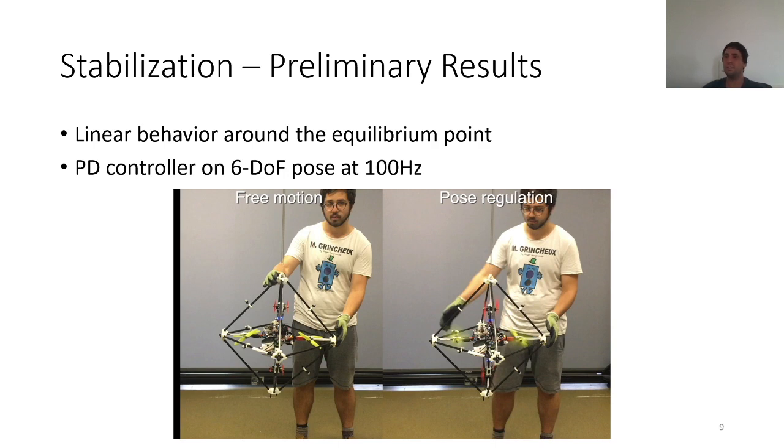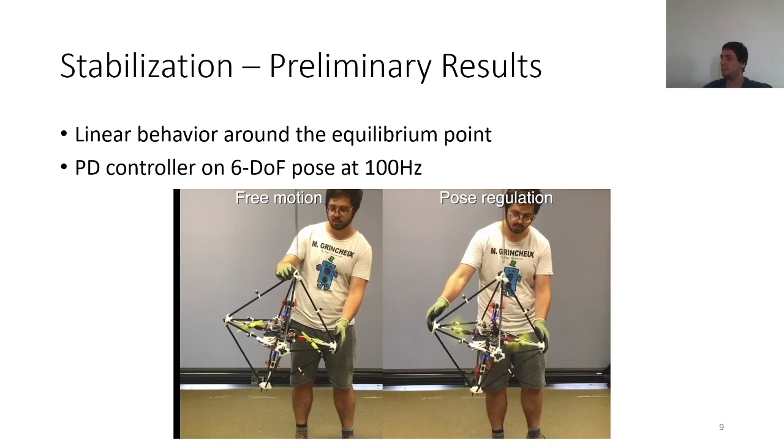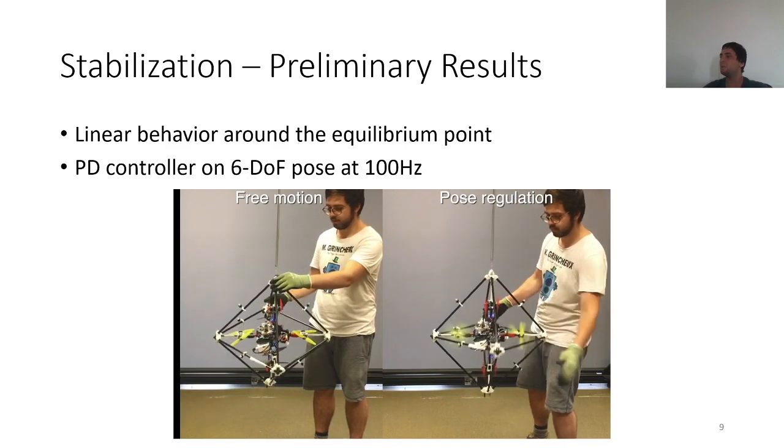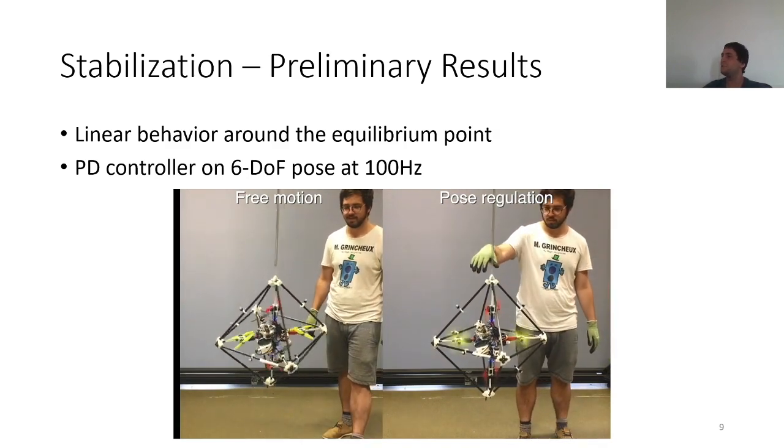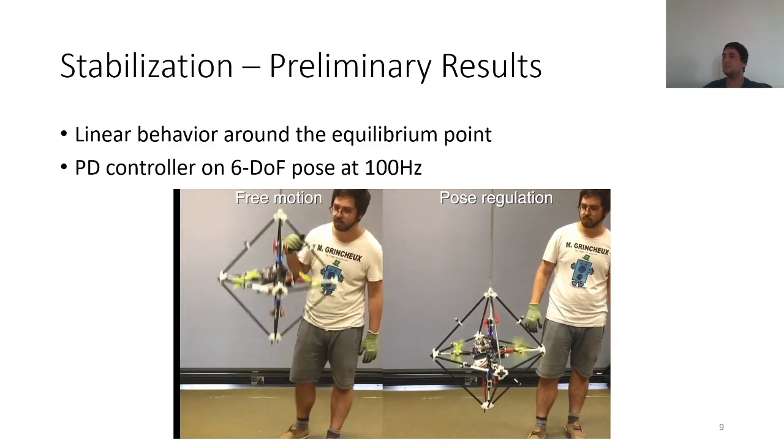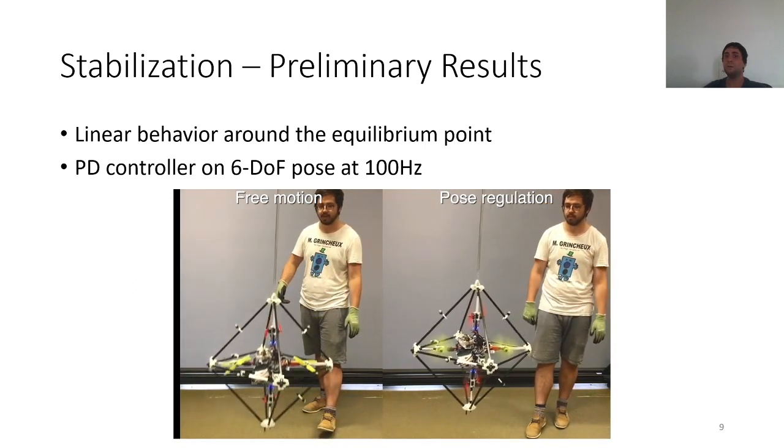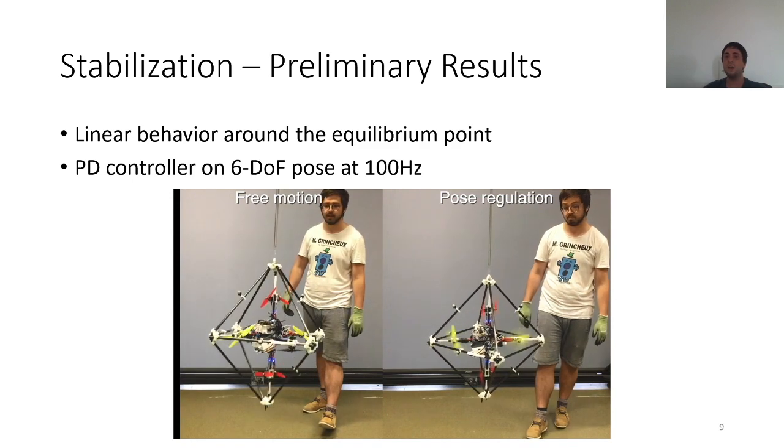Here, I'm presenting you some preliminary results we had at the end of my first year. In this case, we are assuming that the robot has a linear behavior around its equilibrium point, and then we are using a PID controller that runs at 100 Hz in order to stabilize the 6 degrees of freedom pose of the robot. At the time, we were ignoring the influence of the unmodeled propeller dynamics. That's why we were working with contra-rotating propellers. In the free motion case, the robot is not damped at all, but in the pose-regulated case, it's stabilized after a few seconds. Obviously, a simple PID controller is not enough to control the robot in the 3D space, especially when we don't have a robotic carrier.